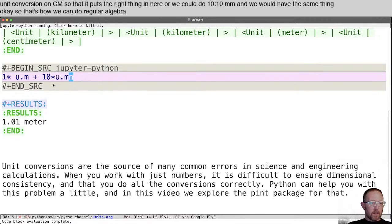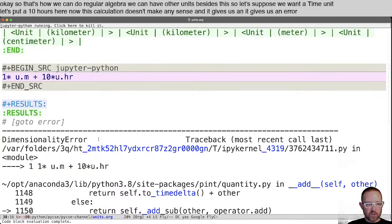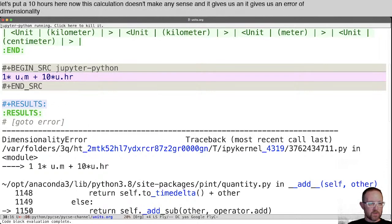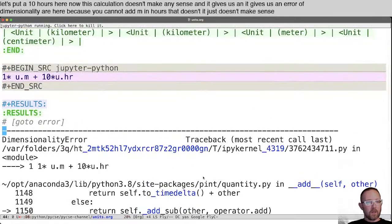We can have other units besides this. So let's suppose we want a time unit. Let's put 10 hours here. Now this calculation doesn't make any sense. And it gives us an error of dimensionality error here because you cannot add meters in hours. That doesn't make sense.